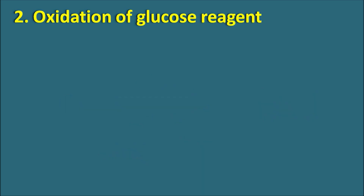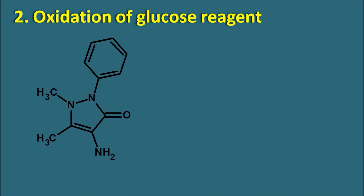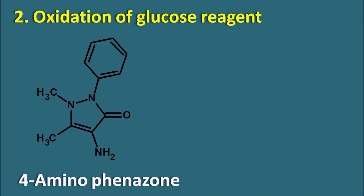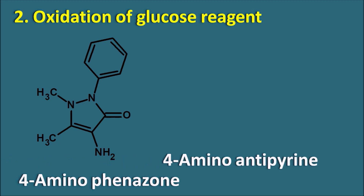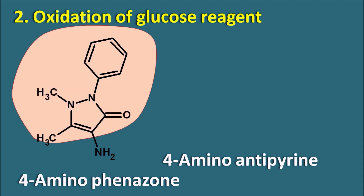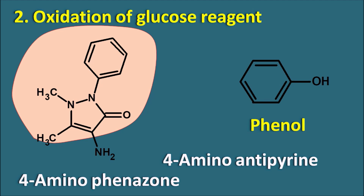Now let us see the second step: oxidation of the glucose reagent. The glucose reagent has two important components. The first is 4-aminophenazone, also known as 4-aminoantipyrene — this is the antipyrene or phenazone nucleus with an amino group at the fourth position. The second component is phenol. Along with these, the glucose reagent also contains the enzymes GOD and POD, as well as buffers to fix the pH. GOD and POD are utilized in the first step, while the 4-aminophenazone and phenol are utilized in the second step.